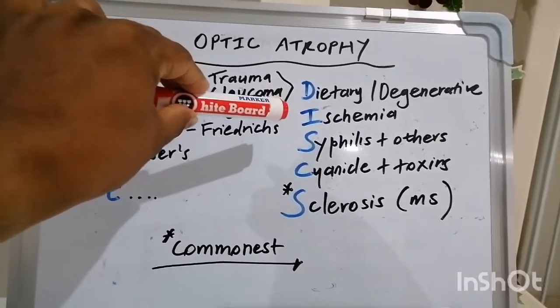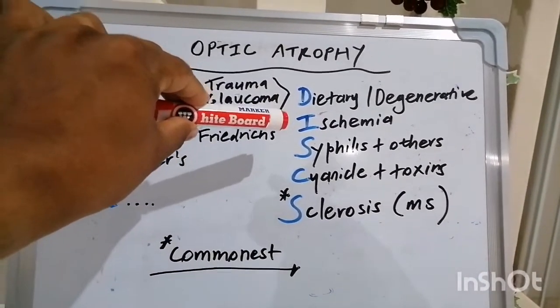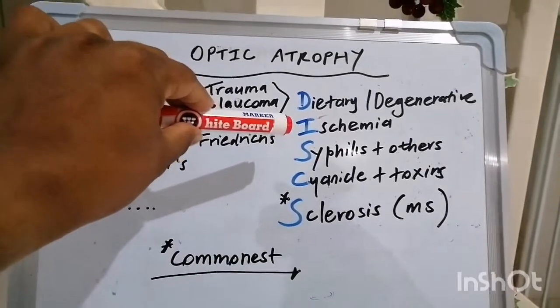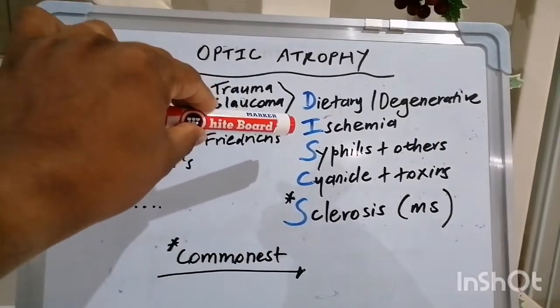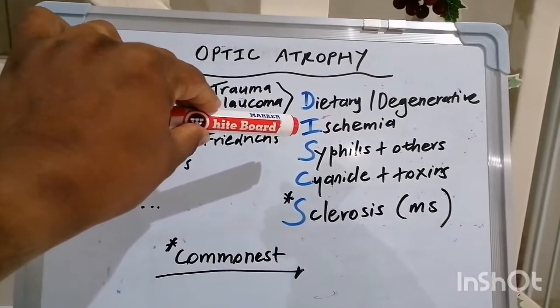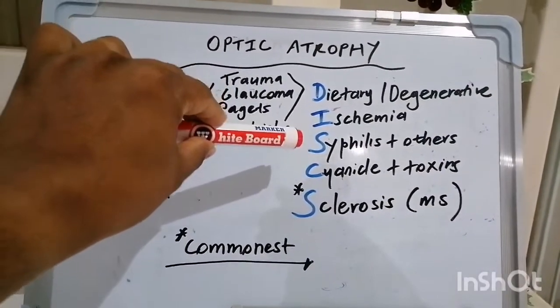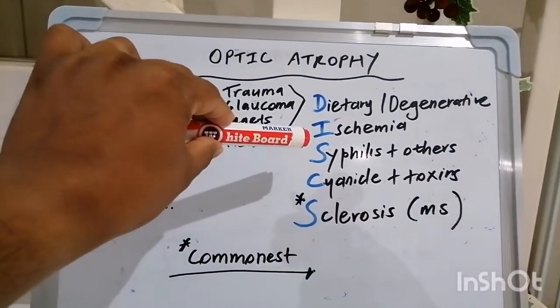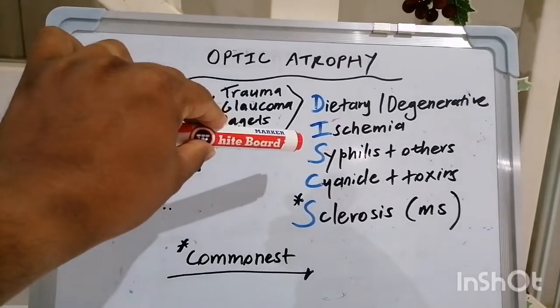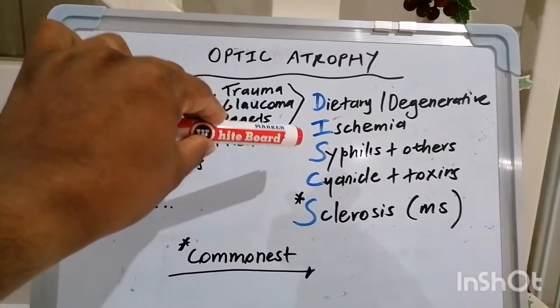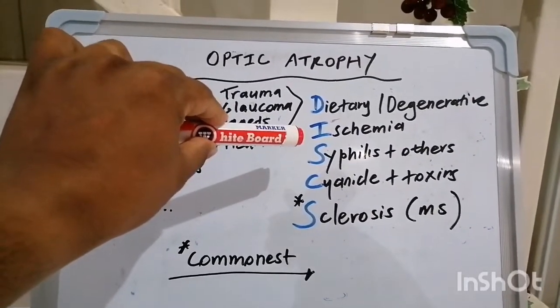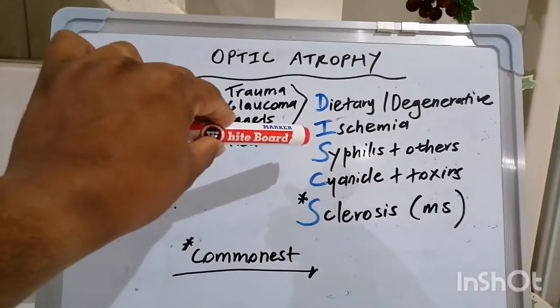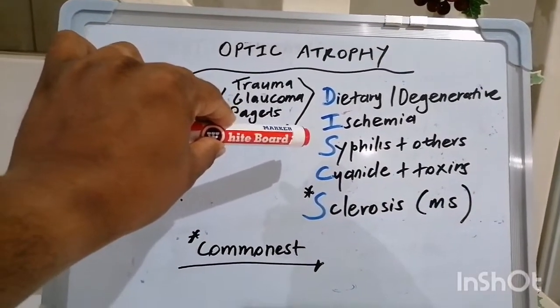I stands for ischemia, specifically central retinal artery occlusion. S stands for syphilis and other infections which can cause optic atrophy, the likes of cytomegalovirus and toxoplasmosis.